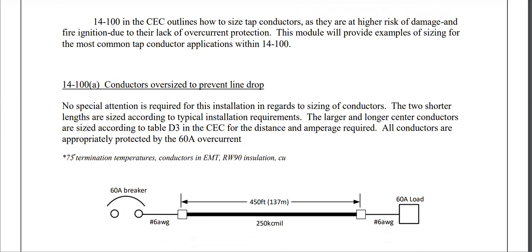Rule 14-100 discusses how we deal with this situation. Essentially, 14-100 starts with the statement that all conductors need to have an overcurrent to protect them at the point of their supply and every time that the wire size is reduced. After making that statement, it then starts into a lengthy process of discussing different exceptions.